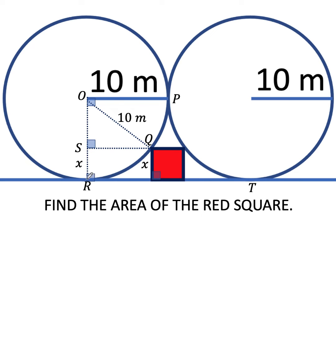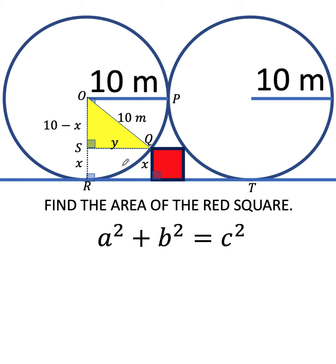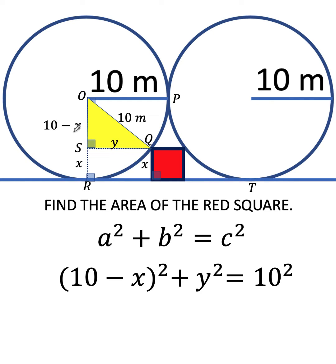Then since the radius OR is 10 meters and SR, which is part of that radius, has a length of x units, then the length of OS must be 10 minus x. Then finally, let's call the length of SQ as y units and let's concentrate on this yellow right triangle. From the Pythagorean theorem, we can form this equation: the square of (10 minus x) plus the square of y is equal to the square of the hypotenuse with a length of 10 meters.